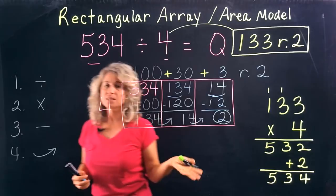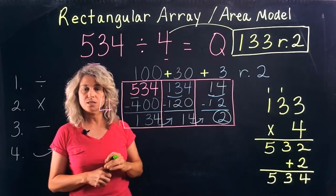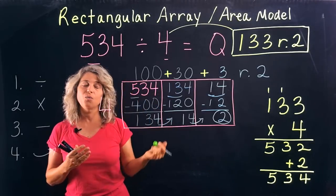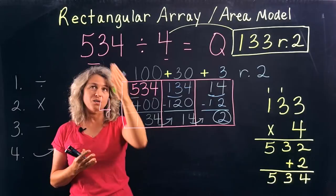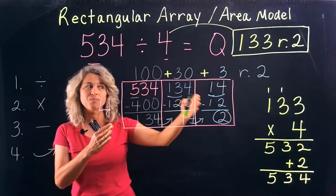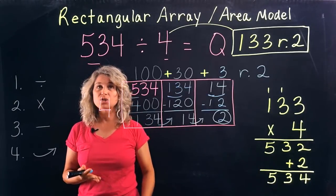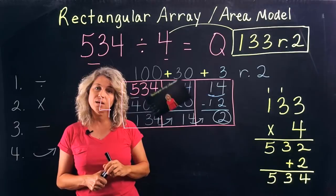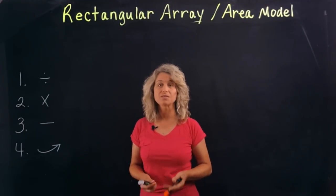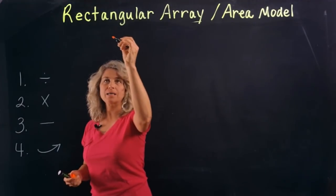We can also do this with larger digits. This example was a number in the hundreds place. If we divided a four-digit number by a one-digit number, how many boxes do you think we'd need? One more box, right! So let's try another one — this time four digits divided by one digit.